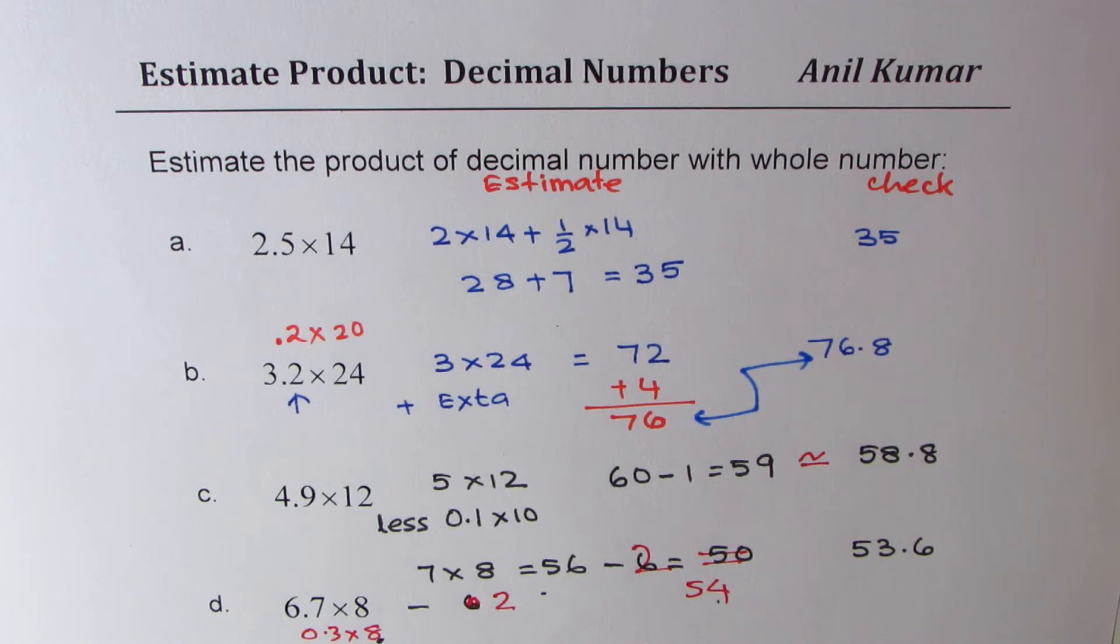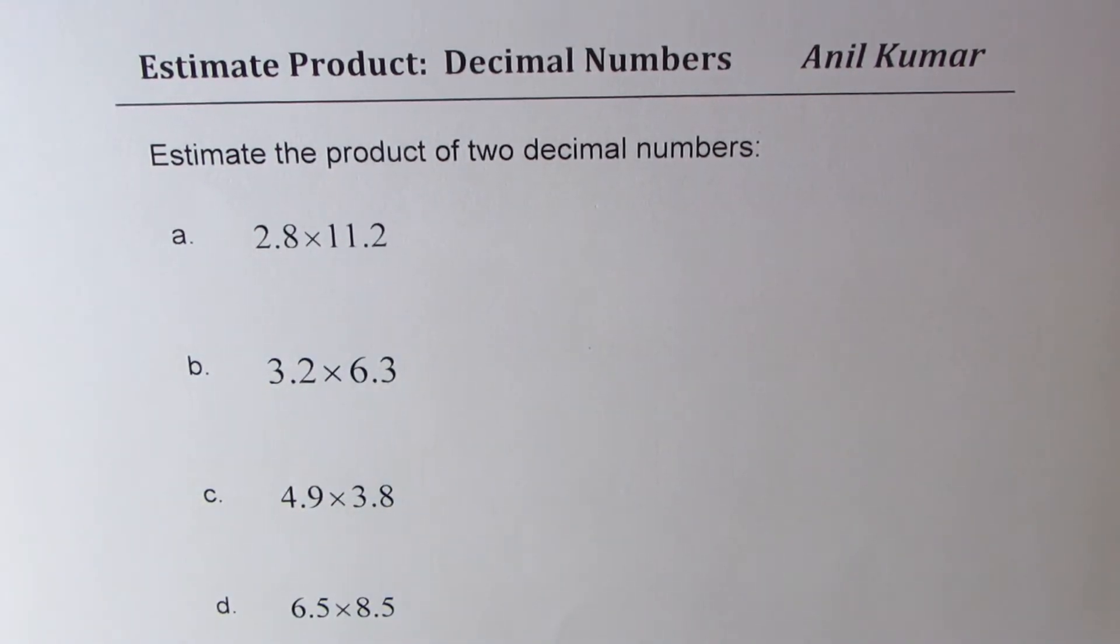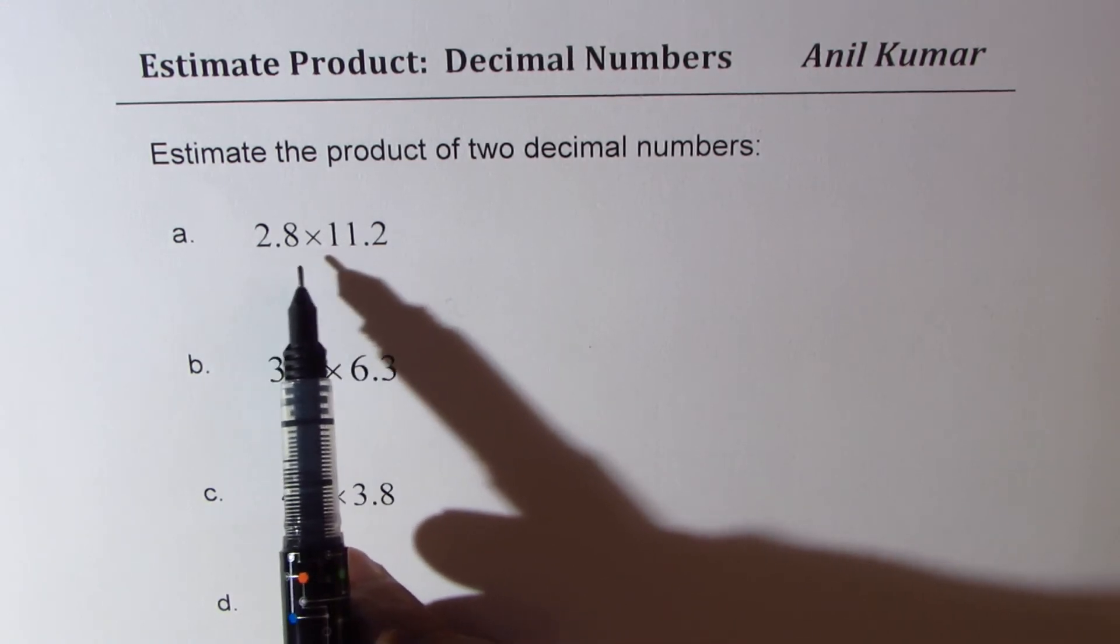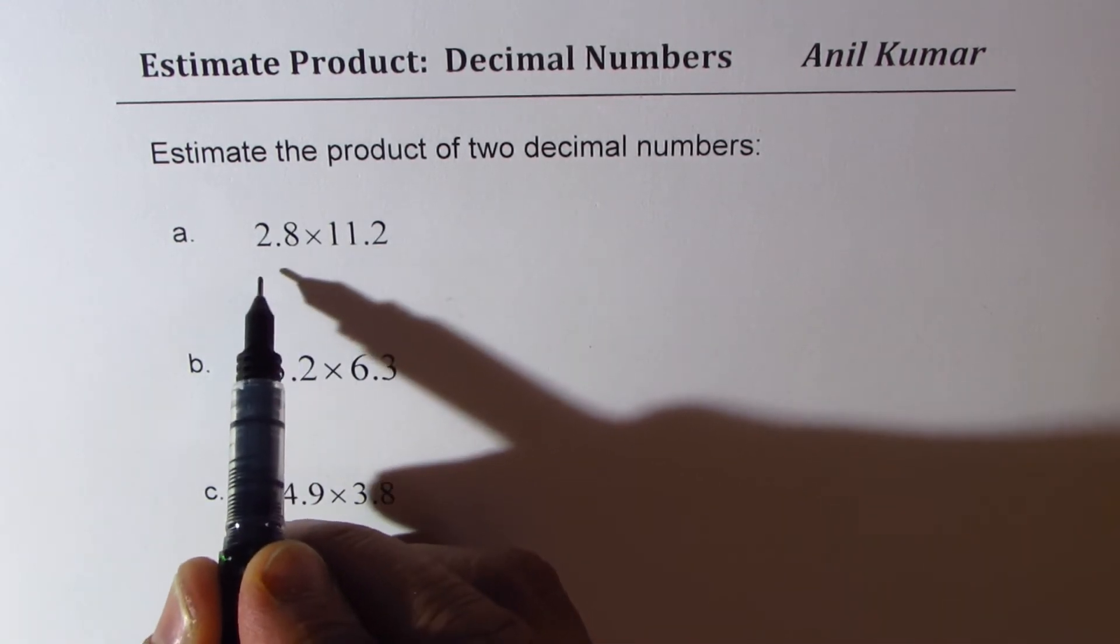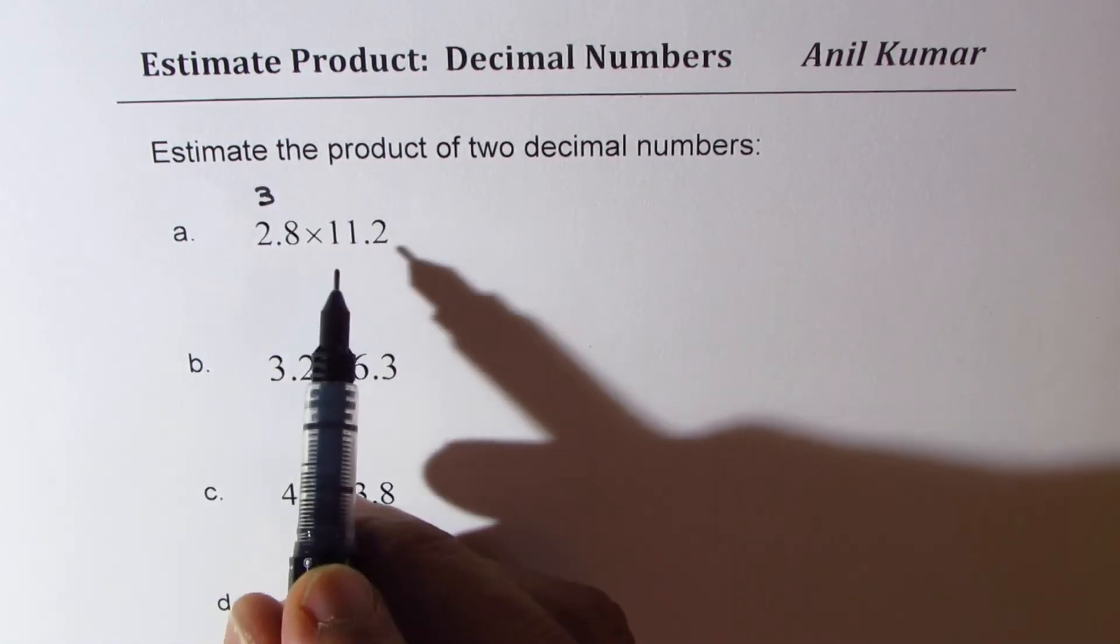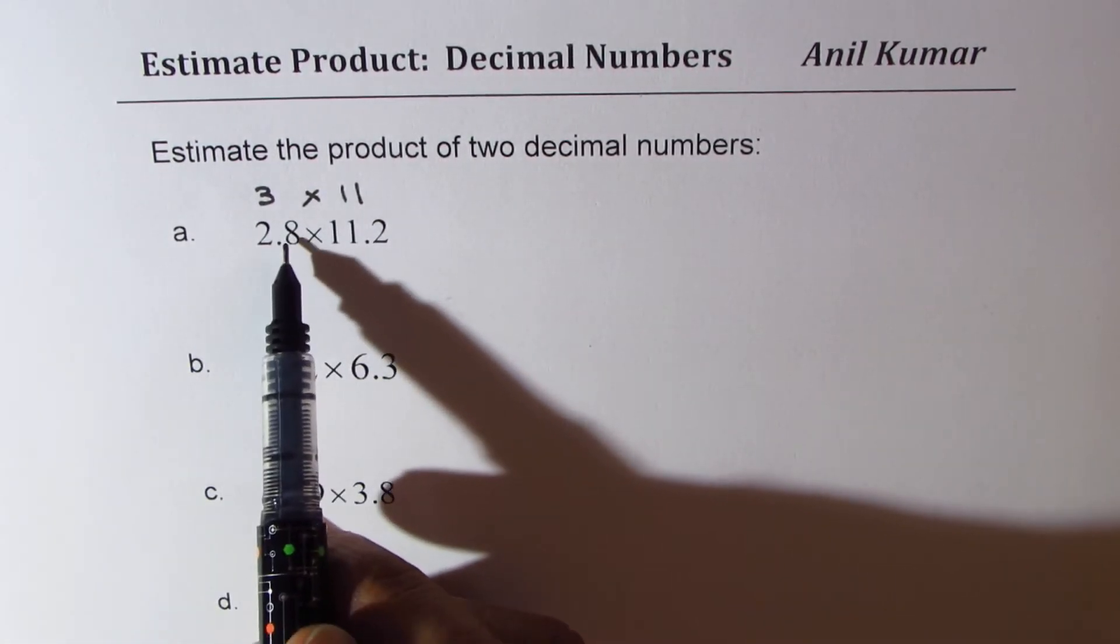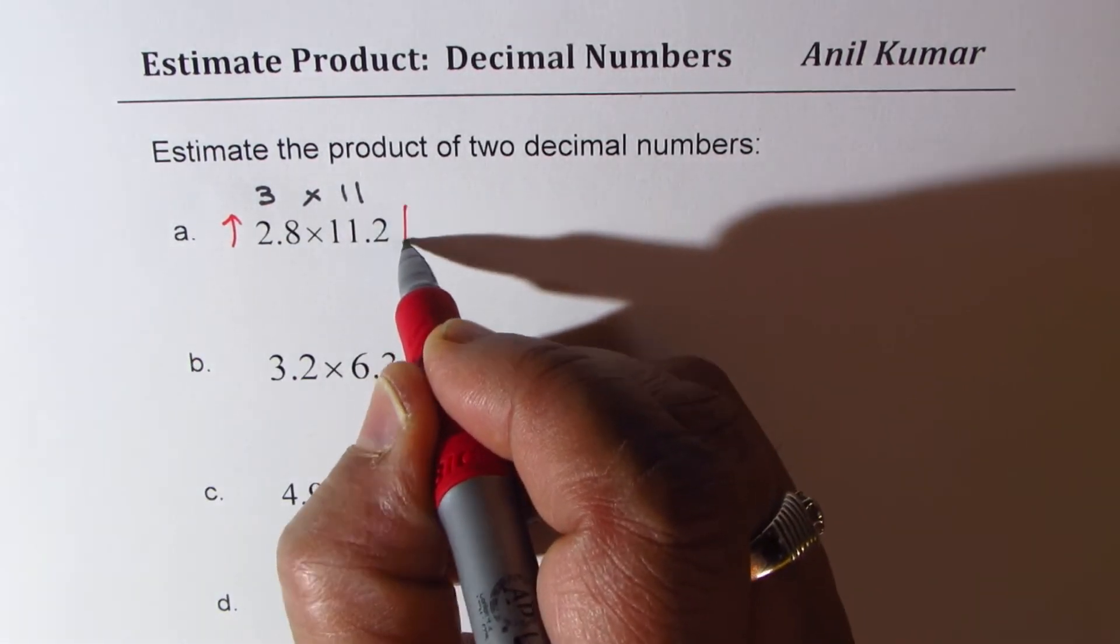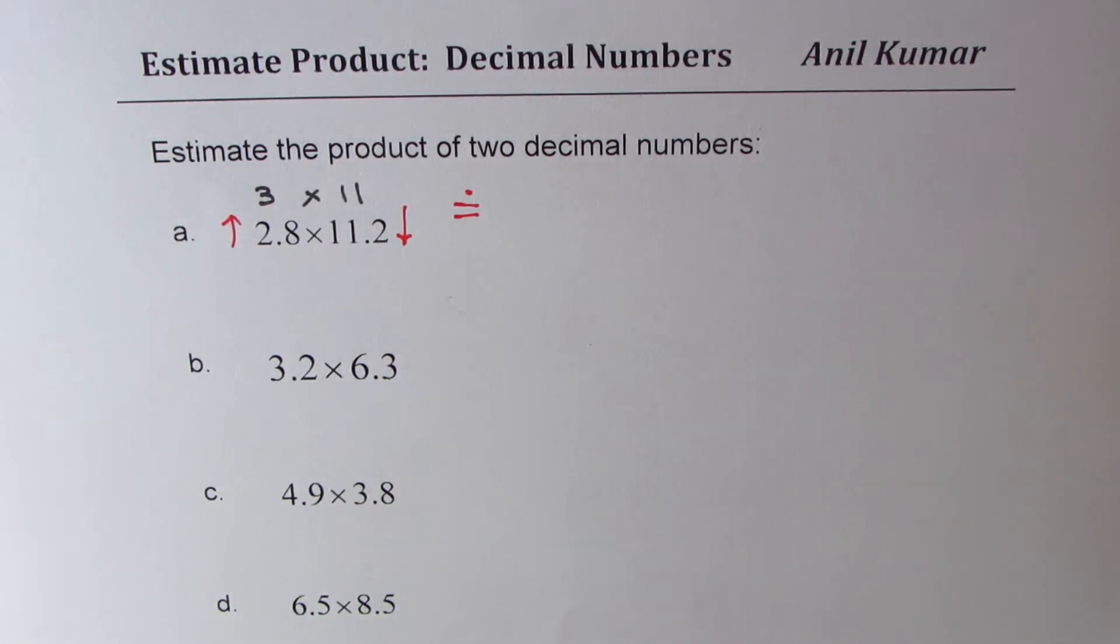Now let's take up product of two decimal numbers. So we have four more questions. We'll see how to estimate product of two decimal numbers. The first one is 2.8 times 11.2. So let us round them. This number 2.8 could be rounded to 3, and 11.2 could be rounded to 11. Since we rounded that higher, we went this side up and this side low, we have fairly good estimate. So the result here is 33.